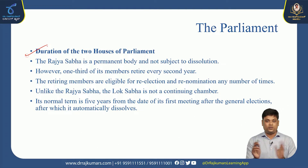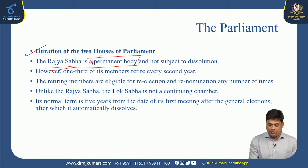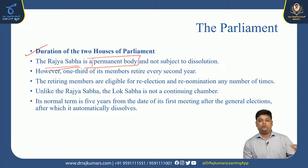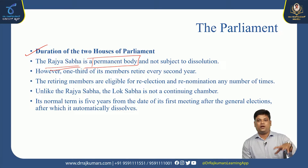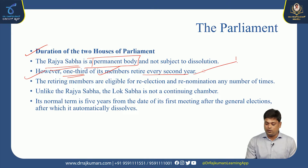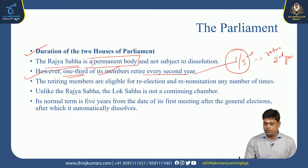The two houses of Parliament have different durations. The Rajya Sabha is a permanent body and is not subject to dissolution. However, one-third of its members retire every second year. For example, if the BJP government is formed and Congress comes to power next, the Lok Sabha is dissolved, but not the Rajya Sabha, as it is a permanent body.